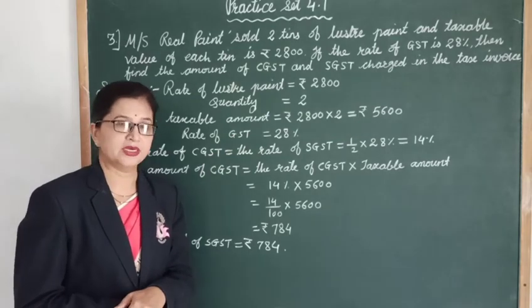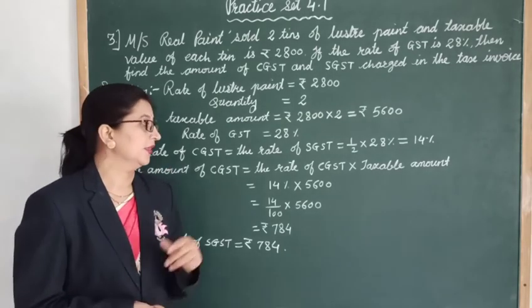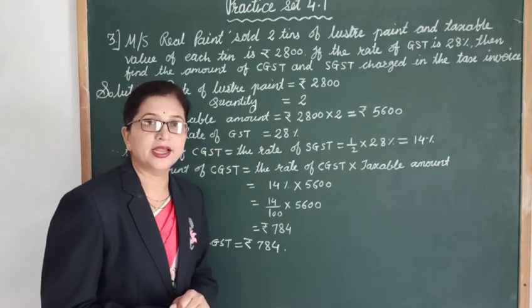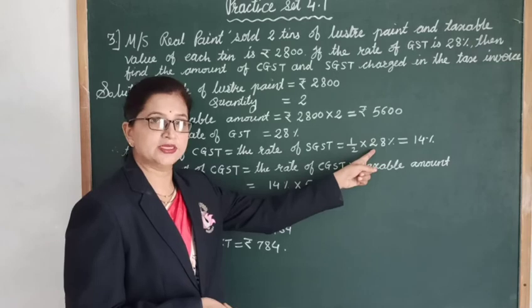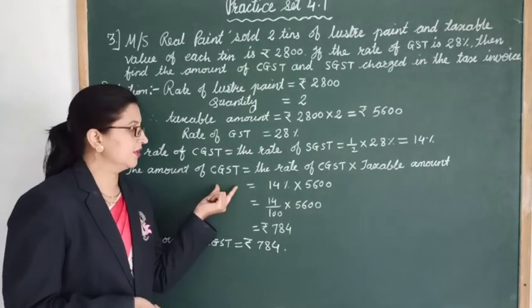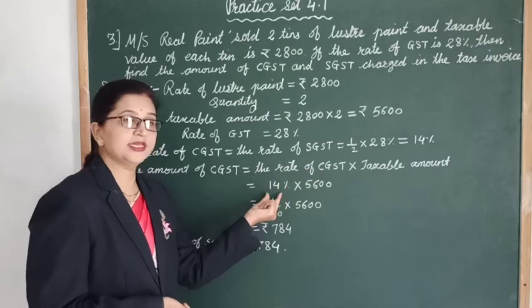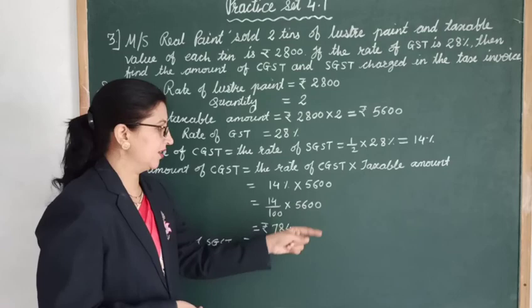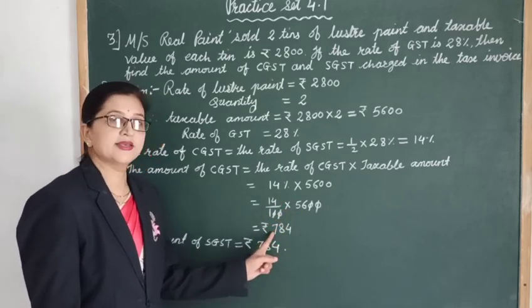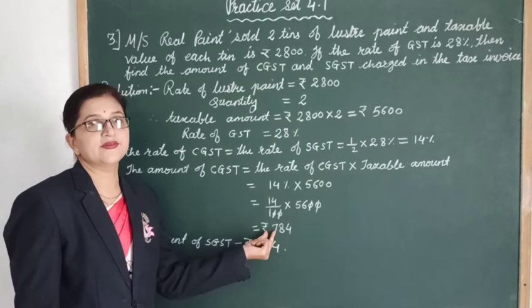Rate of GST is 28%. We have to find out CGST and SGST. The rate of CGST is equal to the rate of SGST — both rates are equal and are half of the rate of GST. Half of 28% is 14%. Amount of CGST equals 14% of 5600, which gives 784 rupees.